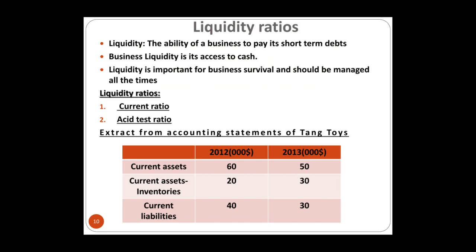Now we move to liquidity ratios. Liquidity is the ability of the business to pay its short-term debts. It is important to know whether the business can pay its current liabilities. We have two liquidity ratios: the current ratio and the acid test ratio.